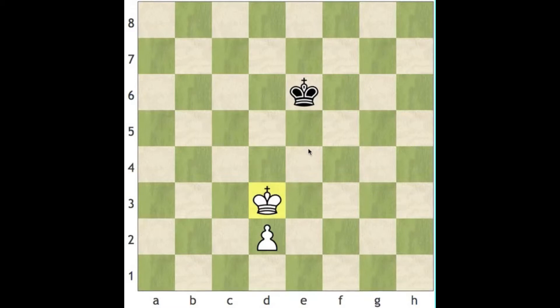That's your objective and let me show you how you'd get there. Of course you start off by taking opposition. You push him back. You start off by playing king to e4.